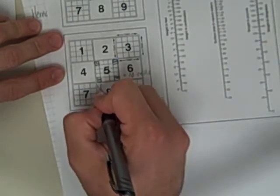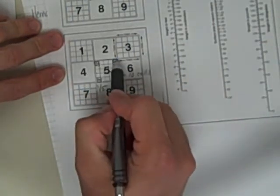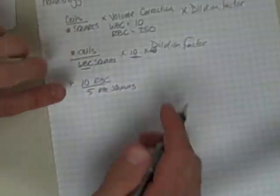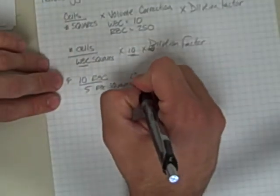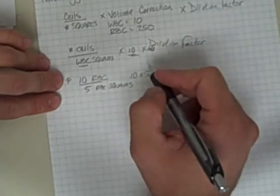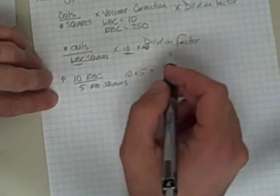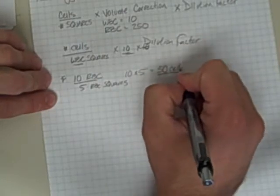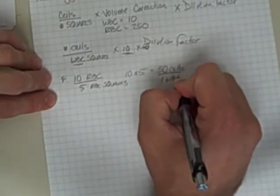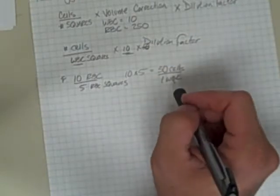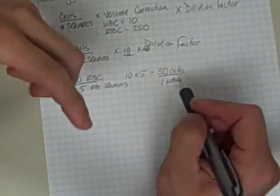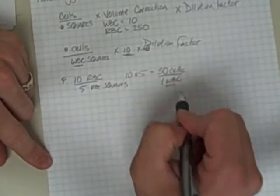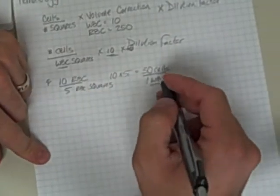When you look at that, these five squares represent one-fifth of the entire white blood cell square. So my calculation, what I would do with that, is just say okay, 10 times 5, because I only counted a fifth. So if I multiply by 5, that gives me 50 cells if I had counted one entire white blood cell square. Then I would multiply that by 10 every time by my dilution factor.